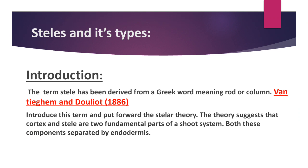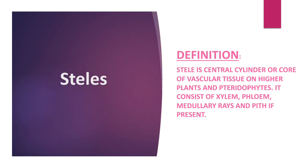Many scientists discovered its meaning and function. The main theory was suggested by a scientist who stated that cortex and stele are two fundamental parts of the shoot system, and both components are separated by the endodermis. Definition of stele: the stele is the central cylindrical core of vascular tissues in higher plants, for example tracheophytes. It consists of xylem, phloem, medullary rays, and pith if present.